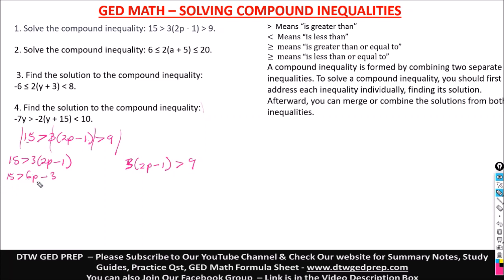Don't take the p — leave the p here. Taking minus 3 across gives us a positive 3. So we have 15 plus 3, that's 18, greater than 6p. To get p, we divide both sides by 6. This cancels, and 18 divided by 6 is 3, so that's 3 greater than p.